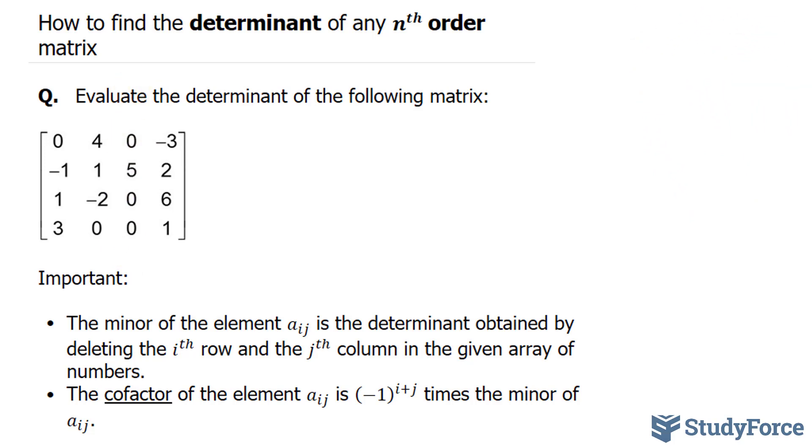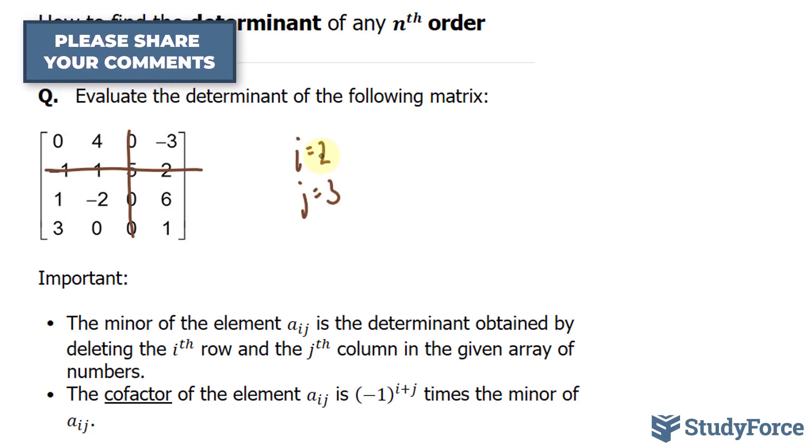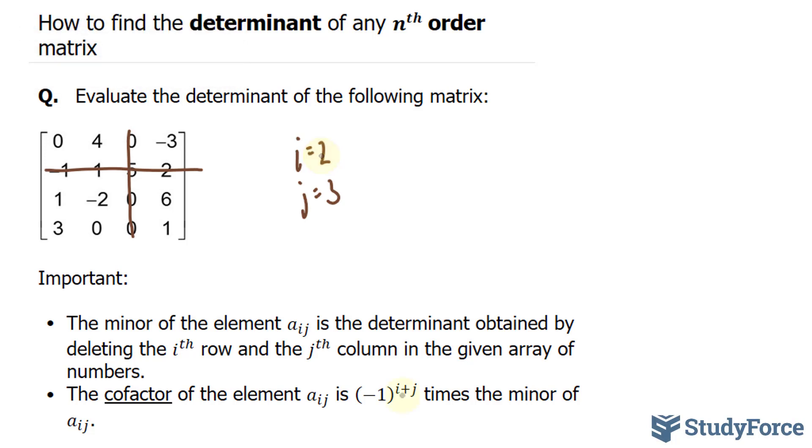you can remove the column and the row where that number exists. So this number is in the second row and the third column, so I'll cross that out. And i represents 2 and j represents 3. So i represents the row and j represents the column. The reason why these two numbers are important is because together those will give you the cofactor. And the cofactor is what will multiply the matrix once this row and this column have been removed.